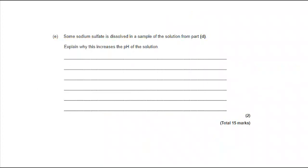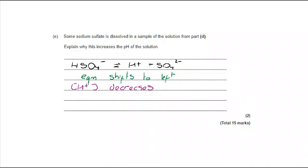Moving on to part E, final part of the question. Some sodium sulfate is dissolved in a sample of solution from part D. Explain why this increases the pH of the solution. Well, here's the equation, and now we're talking about moving things, so we're thinking about it as an equilibrium. I've put the equilibrium sign in. If I add more sodium sulfate, the equilibrium is going to try to decrease the concentration of sulfate ions. It's going to shift the equilibrium to the left. That means we are decreasing the concentration of H plus. And remember, if we decrease the concentration of H plus, it makes it a weaker acid. That takes it closer to 7, so the pH increases.